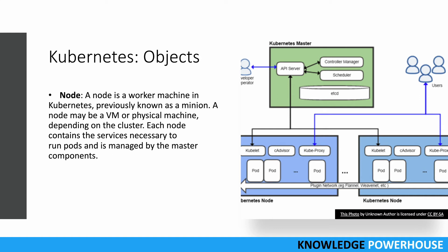A node is a worker machine - actual hardware on which pods run. It can be either a VM or a physical machine. Earlier, nodes were called minions. Each node has services required to run pods: memory, CPU, and servers, all managed by the Kubernetes master. Within each node you also have a kubelet.